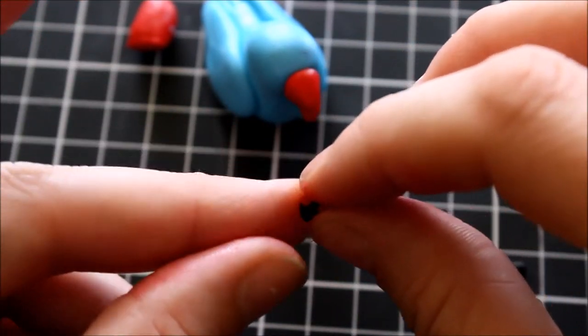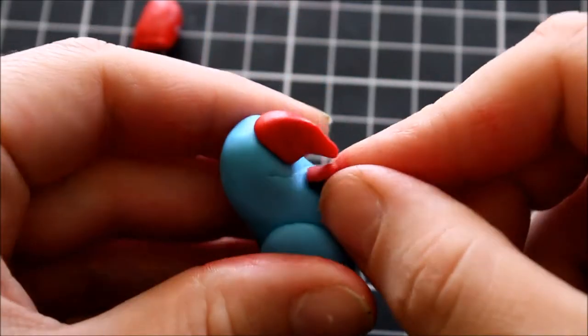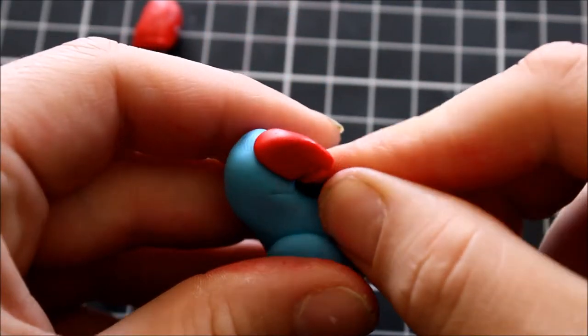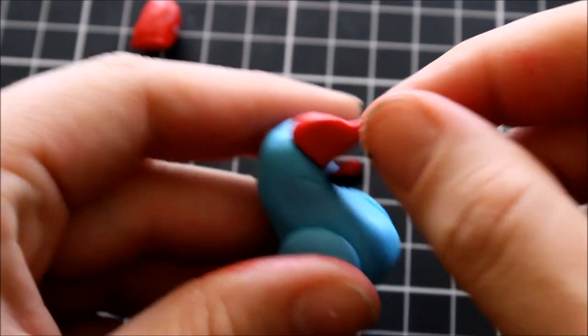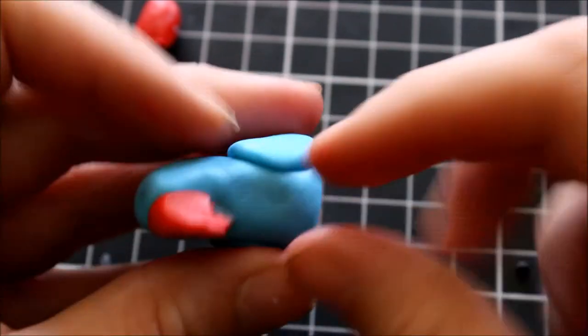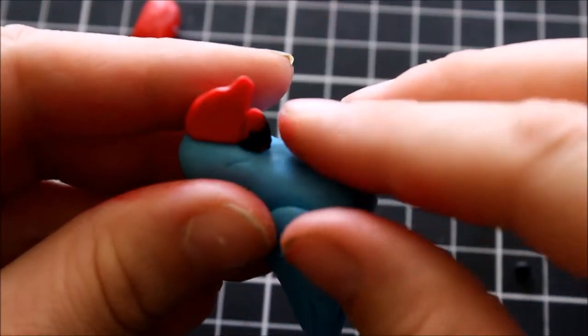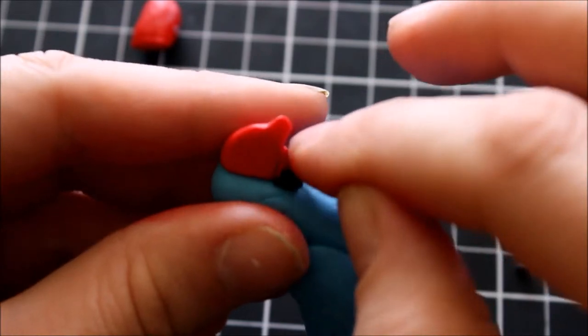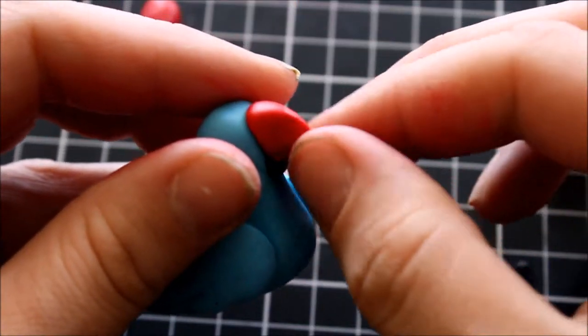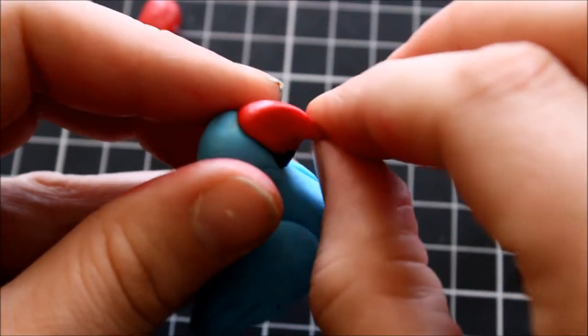Once I'm happy, I'm attaching that by pressing that clay onto the blue clay and making sure that it lines up underneath the red top half of the beak. Again, don't be too fussed with the beak shape at this stage as we will need to reshape it just before we bake it. So just a rough shape is good.